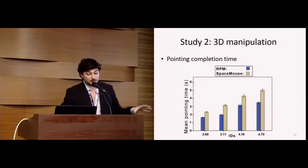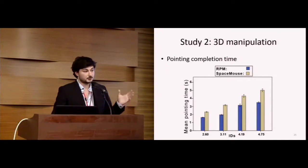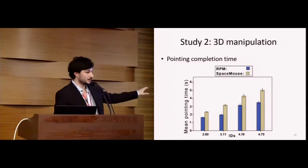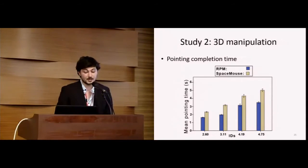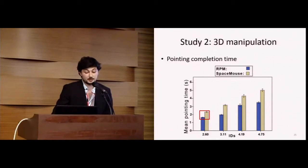Concerning this experiment's results, for the 3D pointing task, we found no difference between the two versions of the Roly-Poly mouse and between the two versions of the SpaceMouse, so we grouped the results in this graph. However, there is a significant difference between the Roly-Poly mouse and the SpaceMouse. On average, 31% faster with the Roly-Poly mouse. And we found that this gap grows as the ID grows.